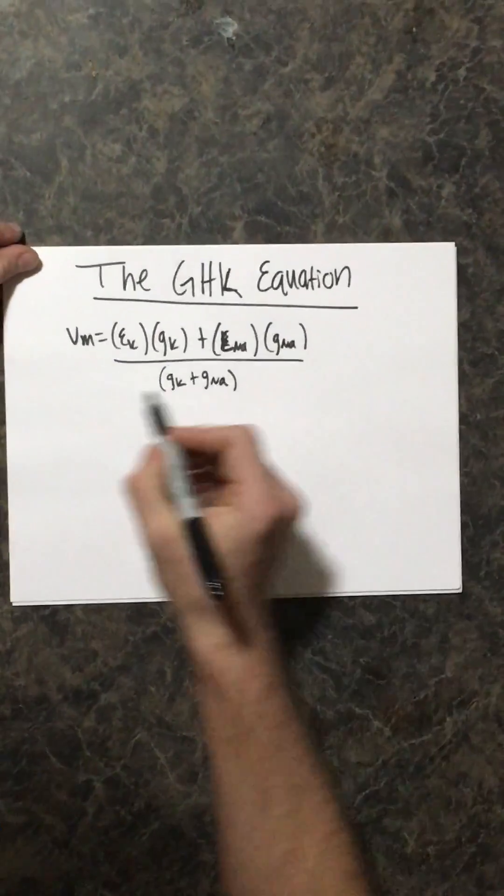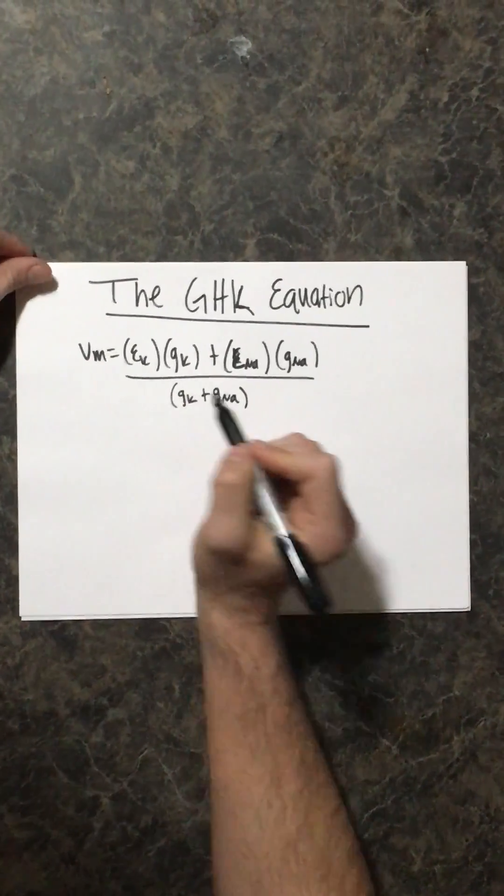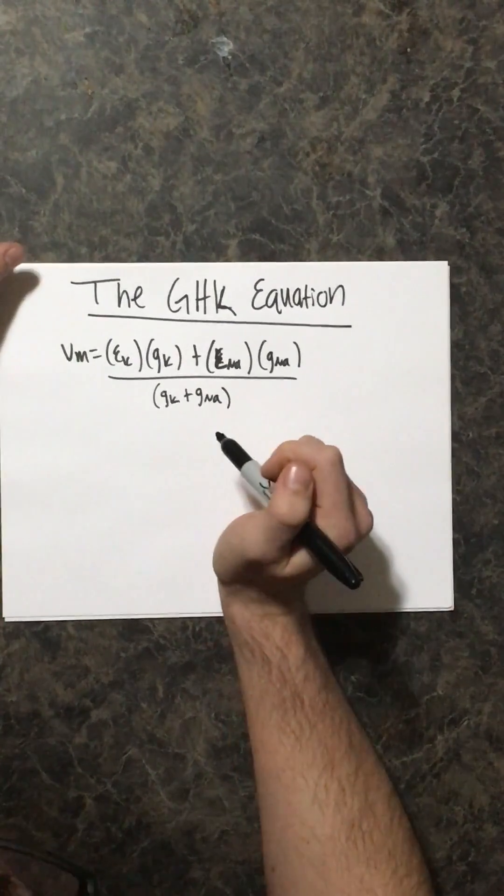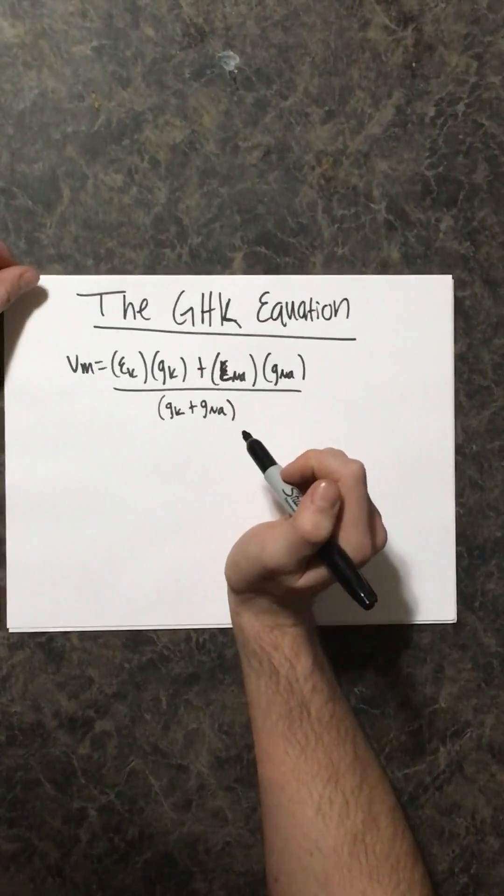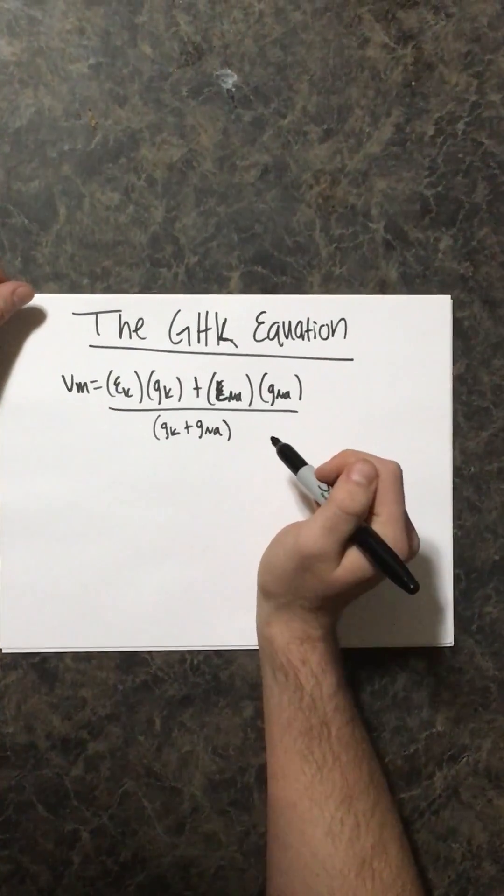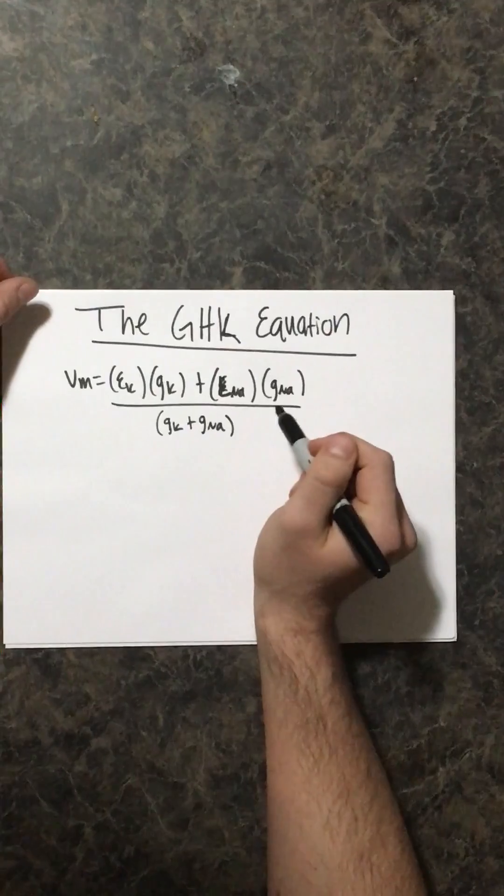So this equation solves for the overall resting membrane potential, represented by V sub m, of the cell. And again, this resting membrane potential incorporates all the individual equilibrium potentials of the ions that you've already solved for using the Nernst equation.